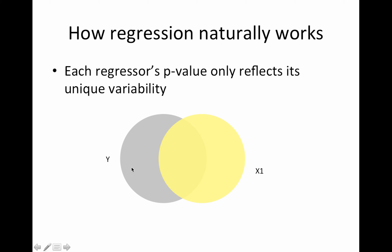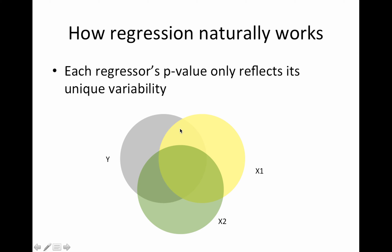Here we have our dependent variable y and our regressor x1, and the p-value for x1 reflects the shared variability between x1 and y. If I add another regressor - say x1 is the regressor of interest and x2 is age - now the p-value for your regressor of interest solely reflects that regressor and it's not being contaminated by the age effect because we've regressed it out. The p-value for x1 only gets this unique contribution, and ditto for x2. This part is modeled out; it doesn't get ignored, but neither regressor really gets credit for it in the same way. We always use the wording 'this is our task adjusted for motion' or 'this is our activation adjusted for age.'